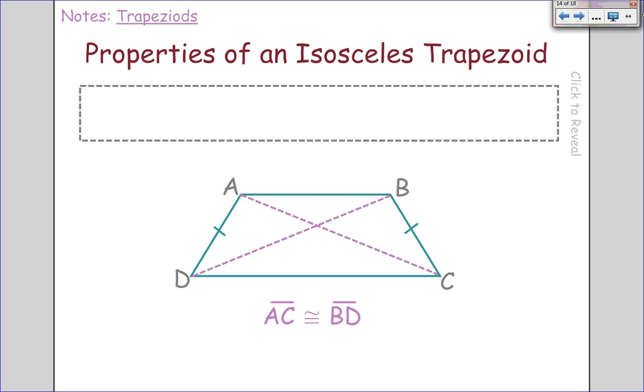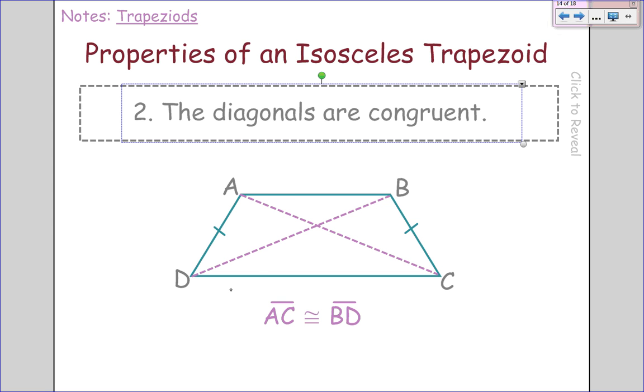One more property of an isosceles trapezoid: the diagonals are congruent to each other. So if it is an isosceles trapezoid, those diagonals are congruent. Now, they do not bisect each other like they did in a parallelogram, but they are congruent to each other, only in isosceles trapezoids.